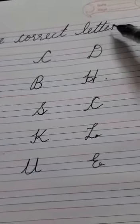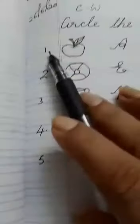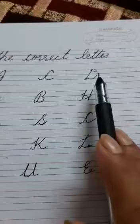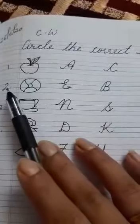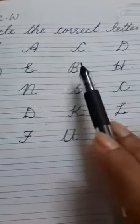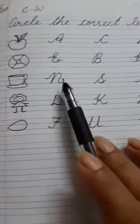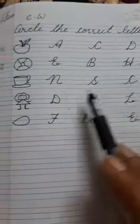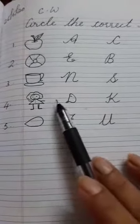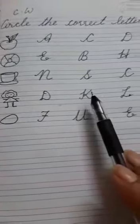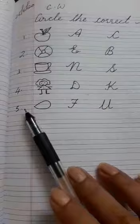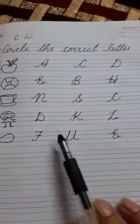Number 1, you will draw apple then you will write A C D. Number 2, ball, E B H. Number 3, cup, N S C. Number 4, doll, D K L. Number 5, egg, F U E.